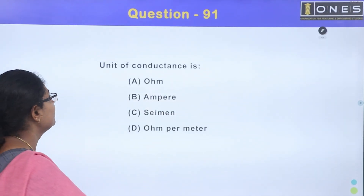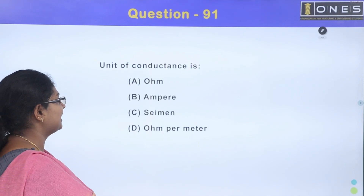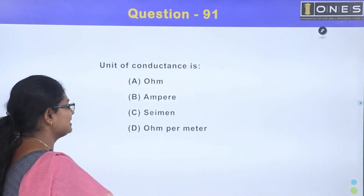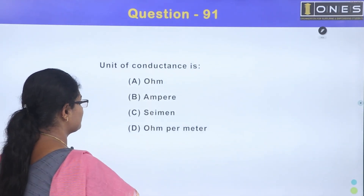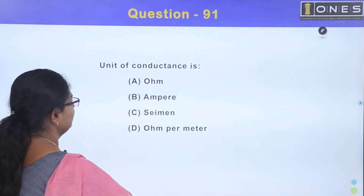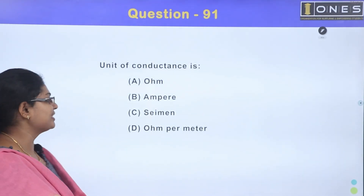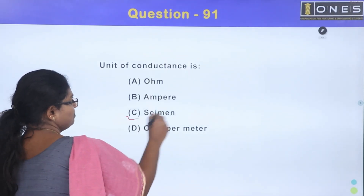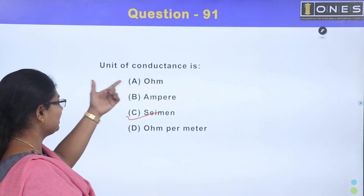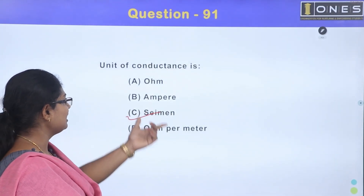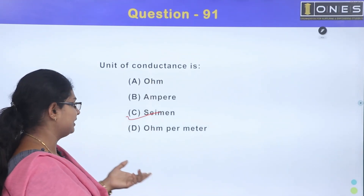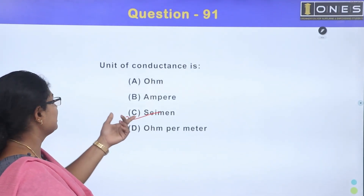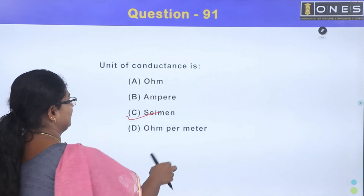Unit of conductance: Option A, ohm; Option B, ampere; Option C, Siemens; Option D, ohm per meter. Conductance is the reciprocal of resistance. The unit of conductance is Siemens. The answer is Option C, Siemens.